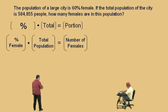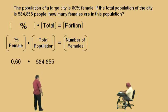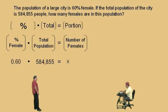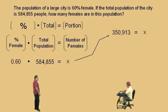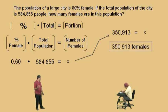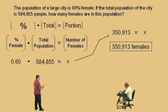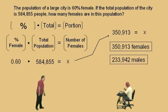Our percent female as a decimal is 0.60. Our total population is 584,855, and we put x for the number of females because that's what we're trying to find. Take 0.60 times 584,855 — that gives us 350,913 females. Now if that's the number of females, how do we find the number of males? Subtract. Take 584,855 minus 350,913, and you get 233,942 males.